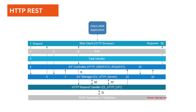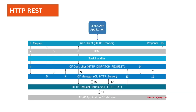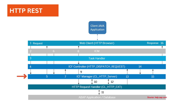Let's quickly look into the server-side architecture of ICF. As you can see in the diagram, when a Java application or a web application makes a request, it is the Internet Communication Manager that takes the request and forwards it to a task handler. From the task handler it goes to the ICF controller, and then to the ICF manager. These are the different steps showing how the message is forwarded to the application.